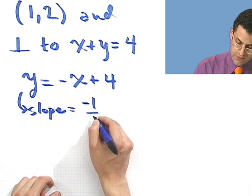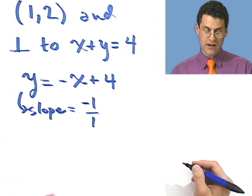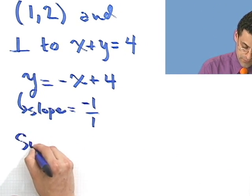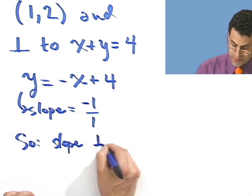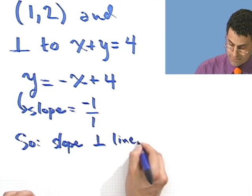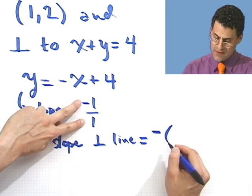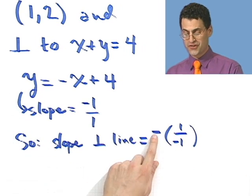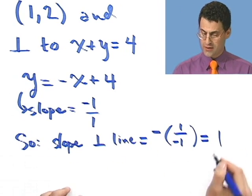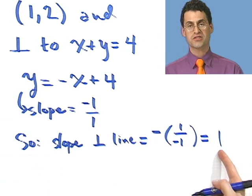Now technically that's sort of -1 divided by 1, if you wish. And now what do I do? Well, to find the slope of the perpendicular line would equal the negative reciprocal. So I take negative and then I flip this, which equals negative negative 1, which equals 1. So the slope of our perpendicular line is going to have slope 1.